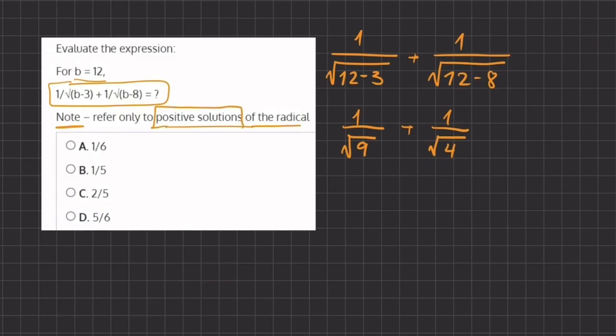Alright, so now that we know this, let's simplify this radical. We have 1 divided by 3, and 1 divided by 2.